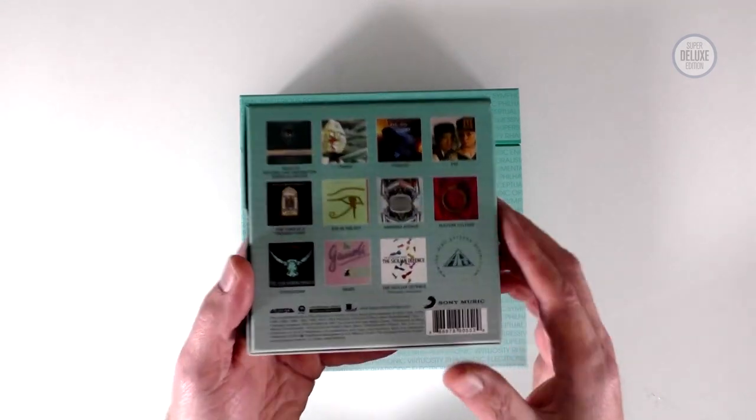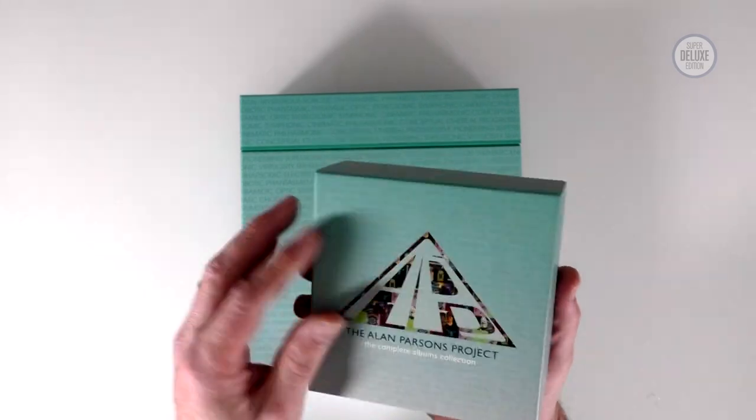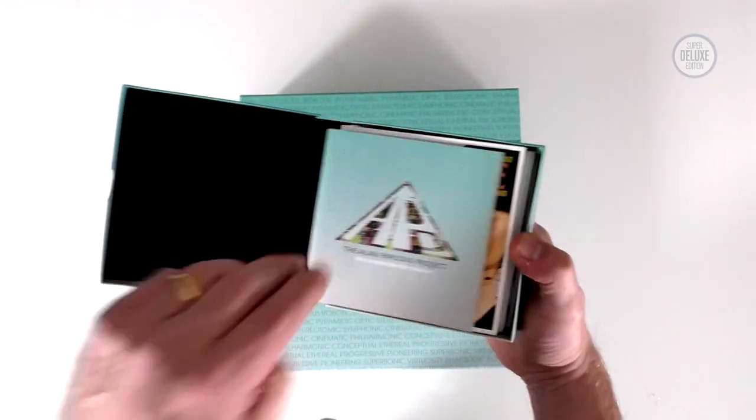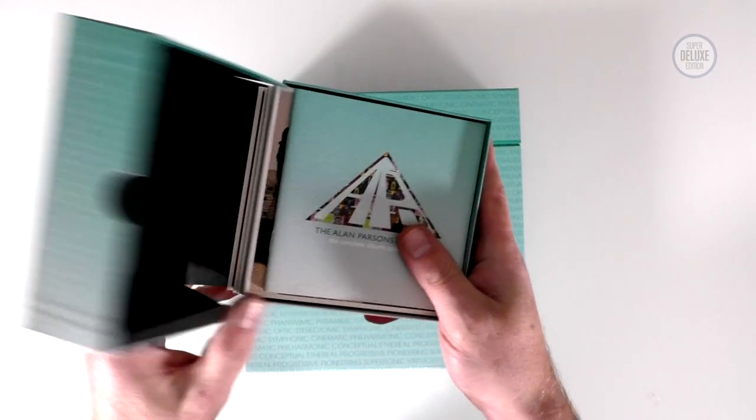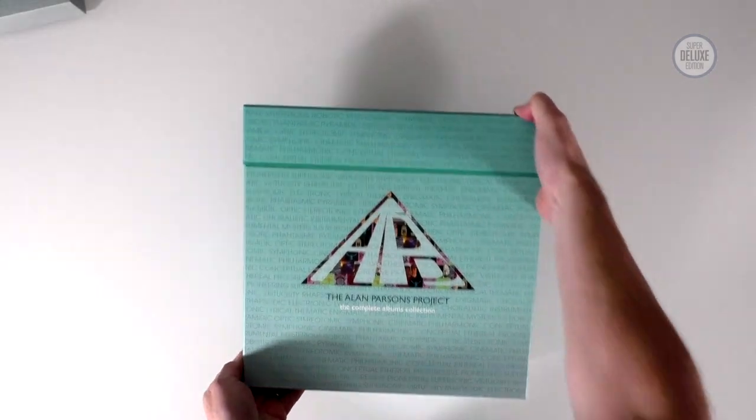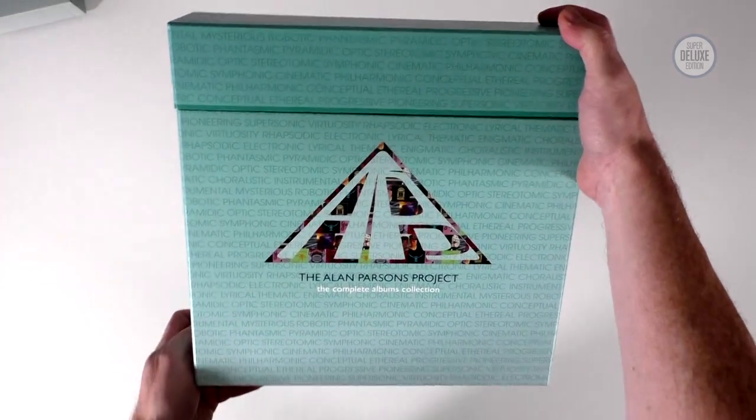So it's what was at the time the unreleased album, the Sicilian Defence. This is like a clamshell box, small booklet and 11 CDs. Obviously this vinyl box is a lot more expensive and it's a lot bigger and heavier.